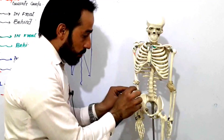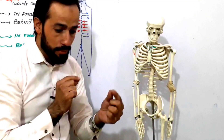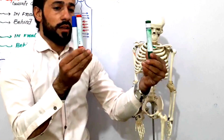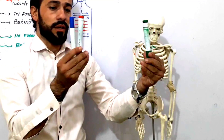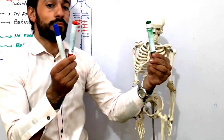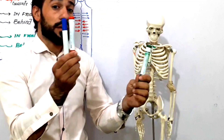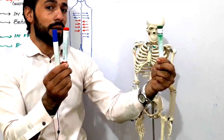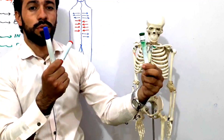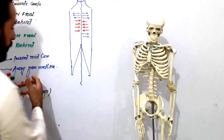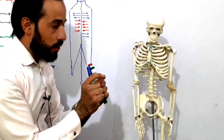So the difference between distal and proximal: look carefully — I am holding these markers. The red marker is proximal to the blue marker, but the green marker is distal to the blue marker. Proximal means near, distal means a little away. We use these terms when discussing the position of different organs.